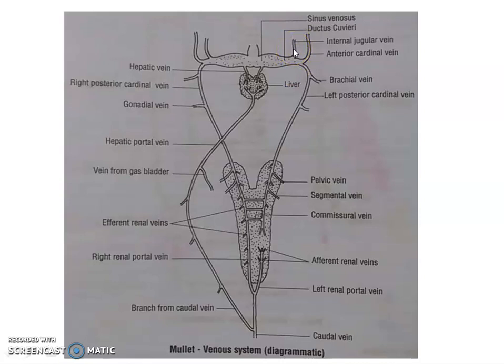The internal jugular vein takes blood from the ventral part of the head — specifically from the floor of the buccal cavity, the branchial region, and the inferior branchial area. The anterior cardinal vein collects blood from the dorsal part — the roof of the buccal cavity and sensory regions. Both veins together collect blood from the head region on both sides.